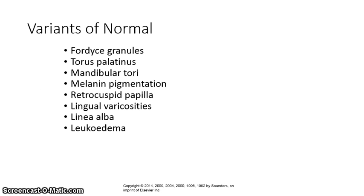Some variants of normal we have already discussed earlier in this chapter. They include Fordyce granules, torus palatinus, mandibular tori, melanin pigmentation, retrocuspid papilla, lingual varicosities, linea alba, and leukoedema.